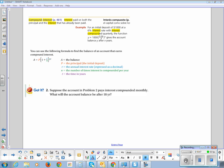Next we're going to talk about compound interest. Compound interest is interest paid on both the principal and the interest that has already been paid, and I've put an example, because it's so helpful to have that example. An initial deposit of $1,000 at a 6% interest rate with interest compounded quarterly, the function Y equals 1,000 times (0.06 divided by 4, because 4 quarters) raised to the X power gives account balance Y after X years.